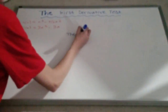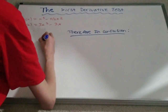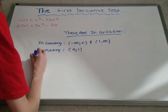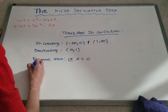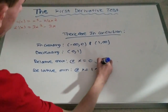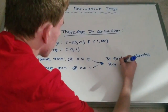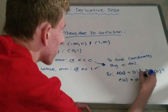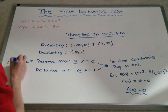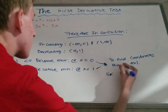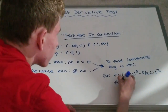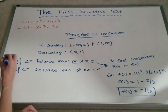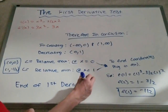Here is what we can conclude from the first derivative test. To find the coordinates of the relative max and relative min, all we have to do is plug the x values into the original function. This concludes the first derivative test.